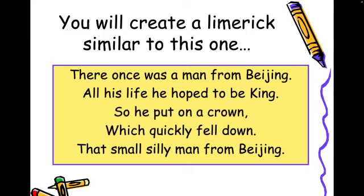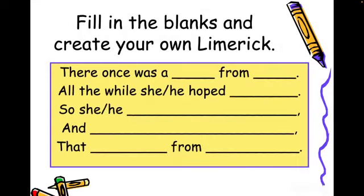Now I'm going to ask you to find your own piece of paper or open a Google Doc and fill in the blanks to create your own limerick. Here's the template: "There once was a [blank] from [blank]. All the while they hoped [blank]. So they [blank] and that [blank] from [blank]." Remember, lines one, two, and five should rhyme at the end, and lines three and four should rhyme at the end.